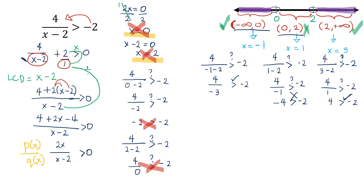Therefore, the solution set, using interval notation, is the union of negative infinity to 0, excluding 0, and 2 to positive infinity, excluding 2. This is the solution set to the given rational inequality. Hope you have learned how to solve rational inequalities. Until next time, bye!